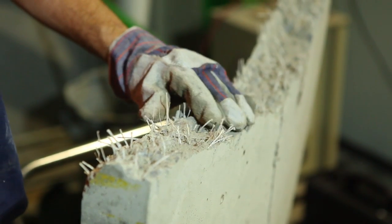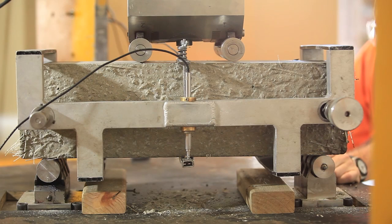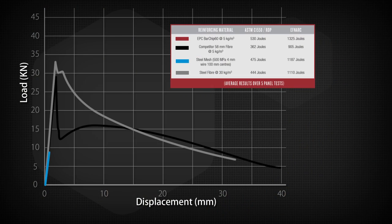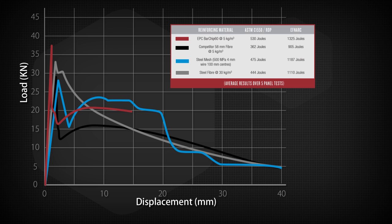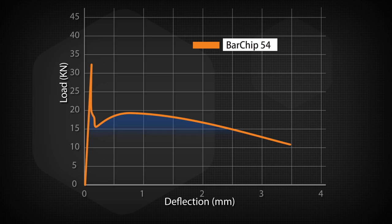Fiber is added to concrete to increase its post-crack flexural strength, known as toughness. This flexural strength or toughness is measured using a beam or panel test. Because fiber performance varies greatly, when designing with fiber reinforcement, you shouldn't specify a volume per cubic meter — you should specify the minimum required post-crack flexural strength. For fiber in concrete, the standard industry performance indicator is measured by the residual strength at a 3 millimeter deflection, or the RE3 value.